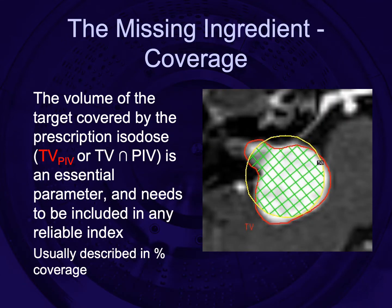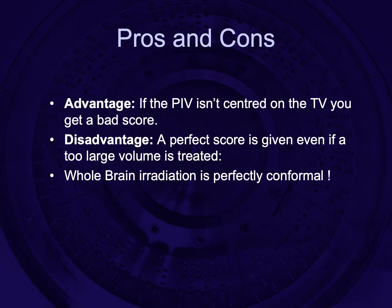The missing ingredient here is coverage — that's the volume of the target covered by the prescription isodose. It's an essential parameter and needs to be included in any reliable index, usually described as a percentage. The advantage is that if the prescription isodose volume isn't centred on the target, you'll get a bad score, which is what you want. The disadvantage is that a perfect score is given even if too large a treatment volume is treated — for example, whole brain irradiation would be described as perfectly conformal if conformity index were just coverage.